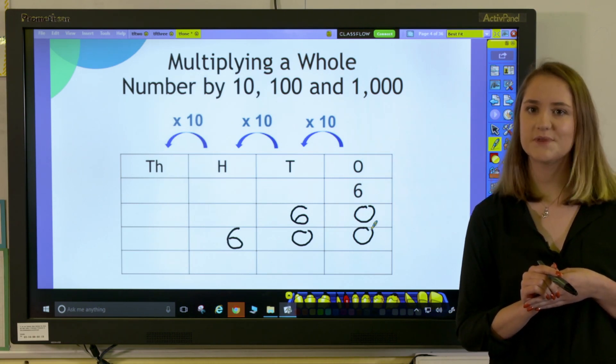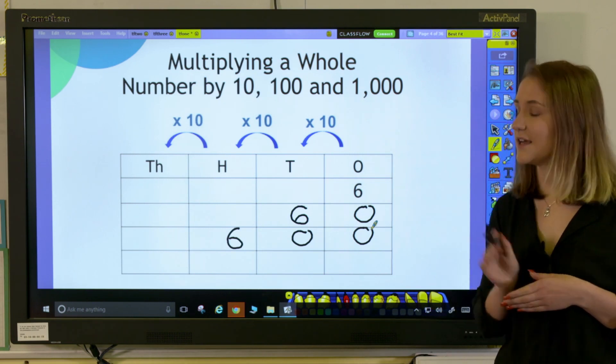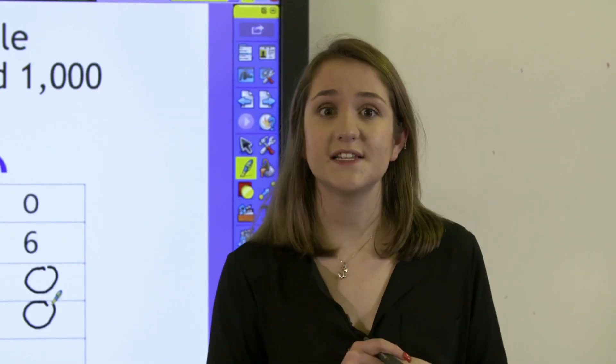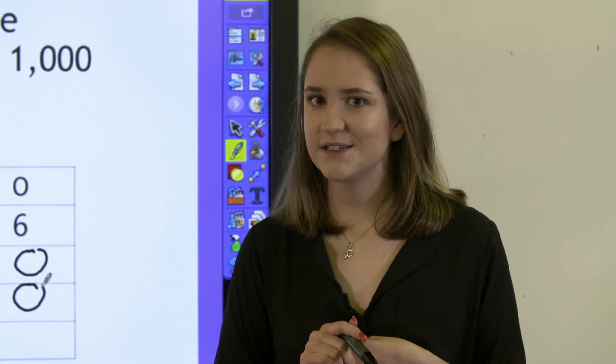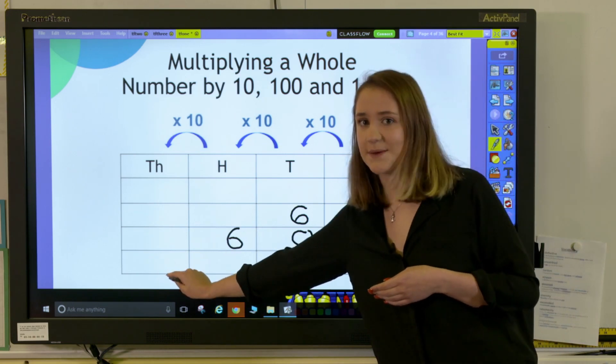Now, what happens when we want to multiply 6 by 1,000? If your pupils have developed an understanding that each column to the left is 10 times greater than the column directly to the right, then they should be able to understand that we're going to multiply it once, twice and 3 times by 10, meaning that our 6 ends up in our 6,000s column.